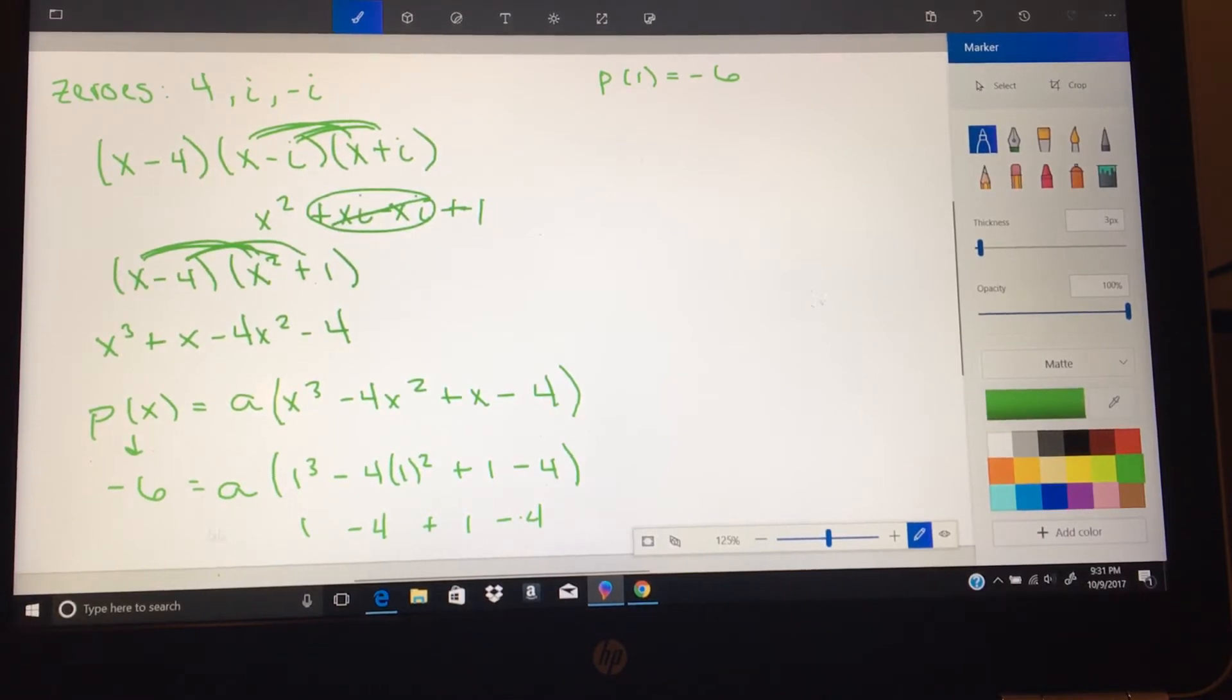So here I get this. I'm going to bring this up here. Negative 6 equals a with a negative 6. So when I solve for a, divide by both negative 6, and I actually get a equals 1.